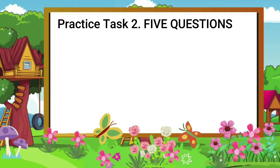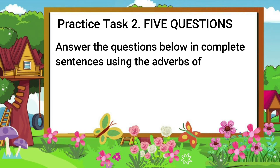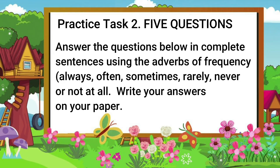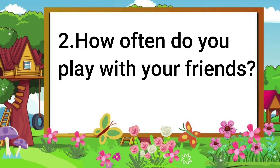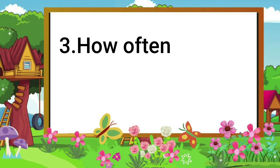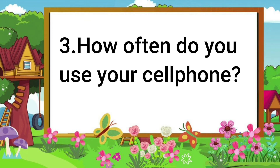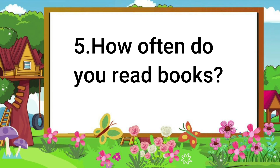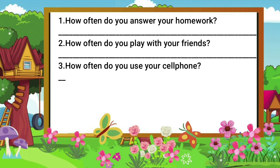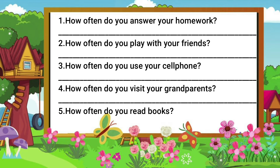Let's have another task. For task 2, we have 5 questions. Answer each question in complete sentences using the adverbs of frequency: always, often, sometimes, rarely, never, or not at all. Write your answers on your paper. Number 1: How often do you answer your homework? Number 2: How often do you play with your friends? Number 3: How often do you use your cell phone? Number 4: How often do you visit your grandparents? Number 5: How often do you read books? You have 15 seconds to accomplish this task. The time starts now.